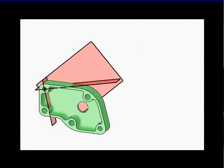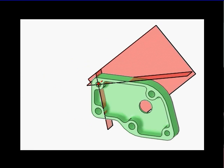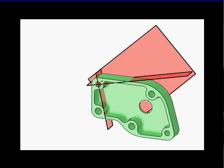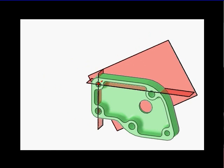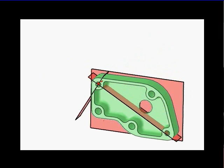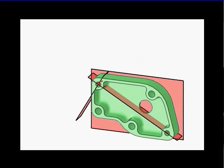So the intersection of your second and third datum planes will intersect at the axis of the hole. That's our datum feature B. And then we use datum feature C to orient the planes of the datum reference frame.